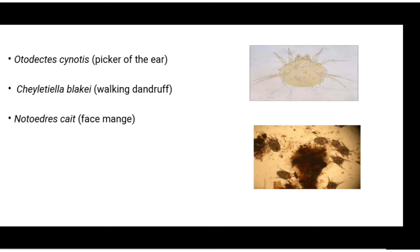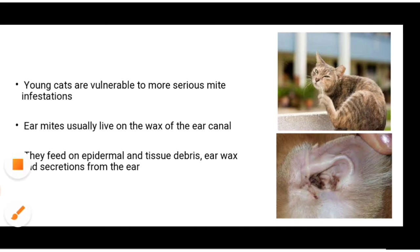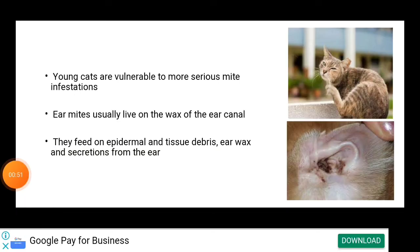In cats, ear mite infection is commonly caused by Otodectes cyanotis, which is the picker of the ear and the most commonly occurring. The second one is Cheyletiella, the black-eyed walking dandruff, and the third one is Notoedres cati, which is face mange.